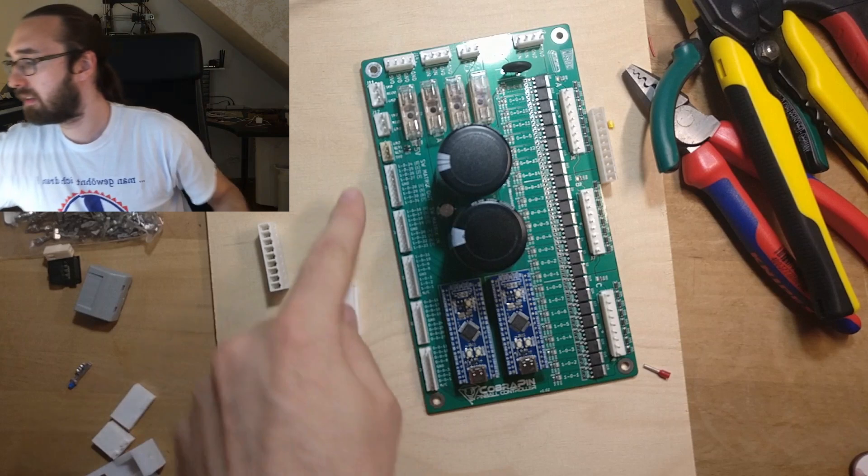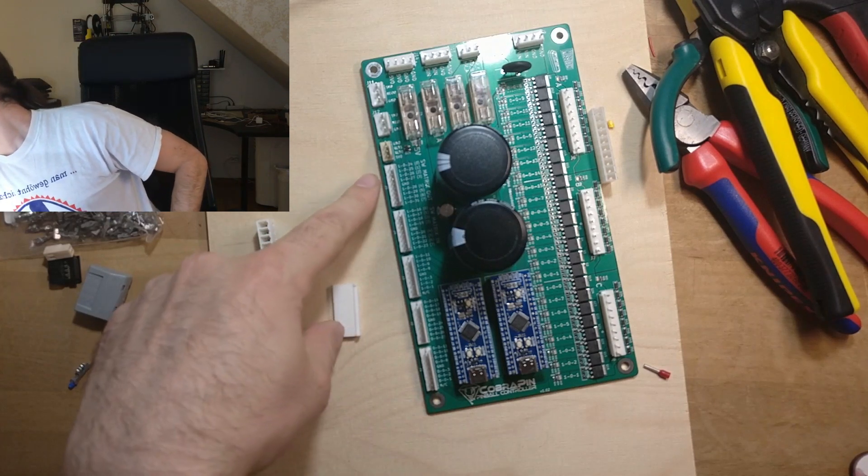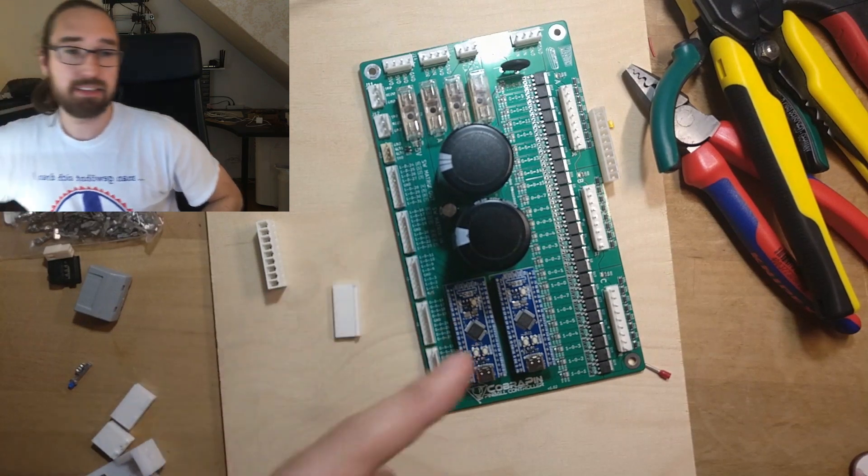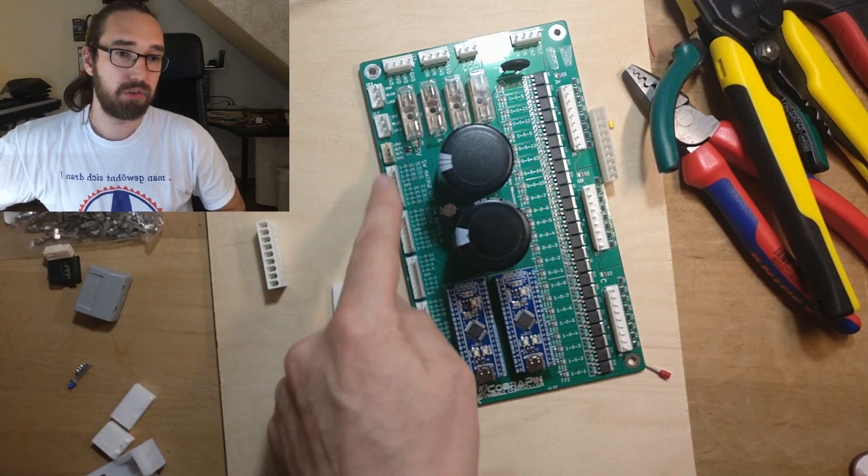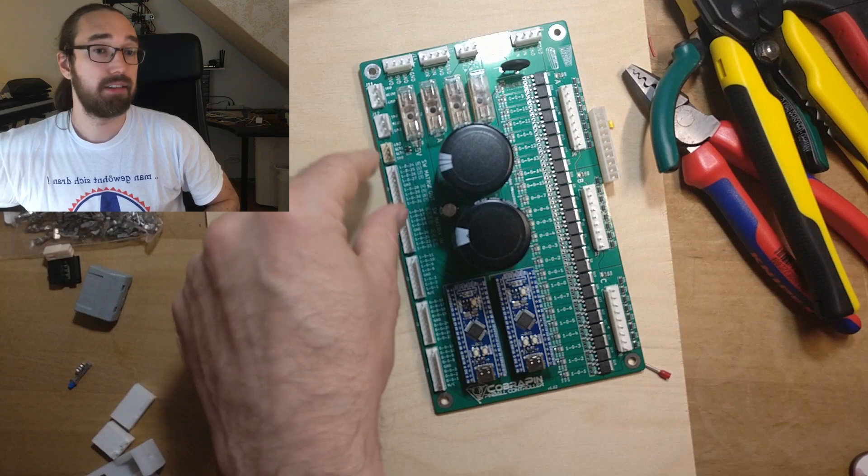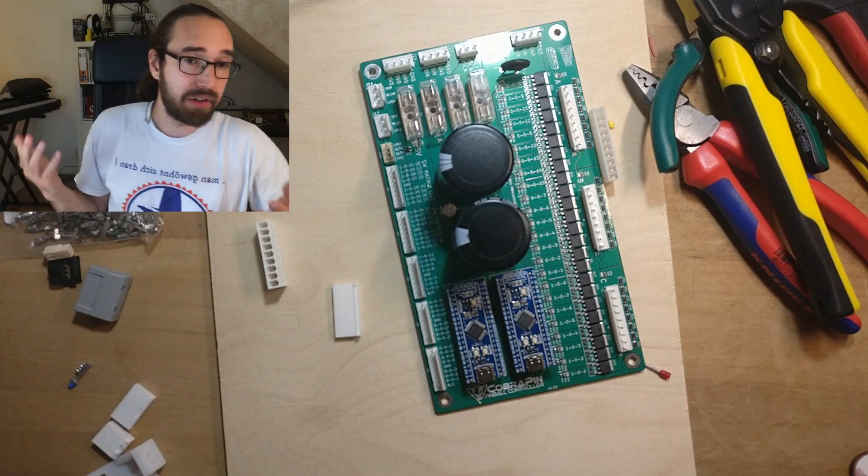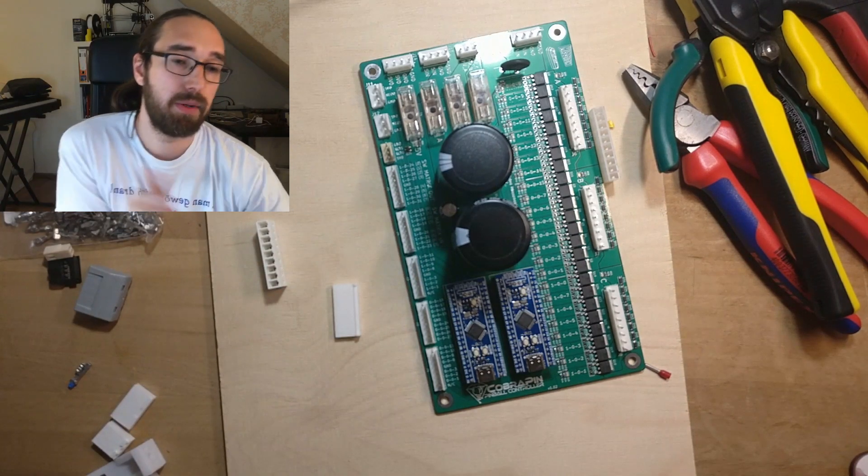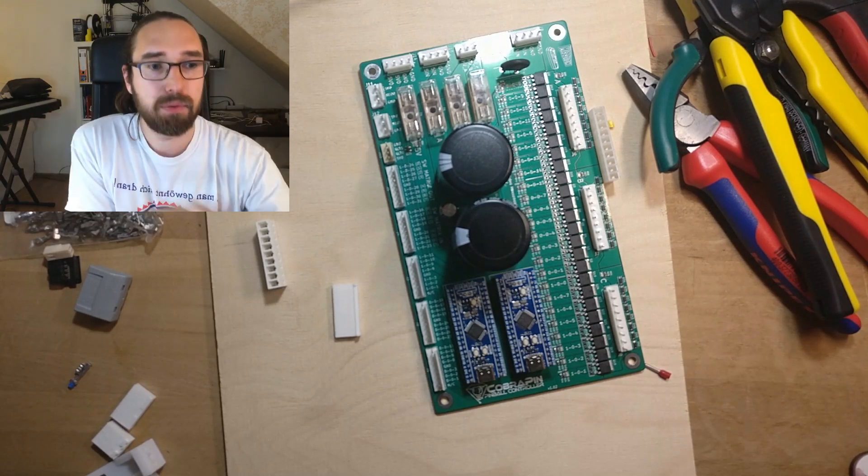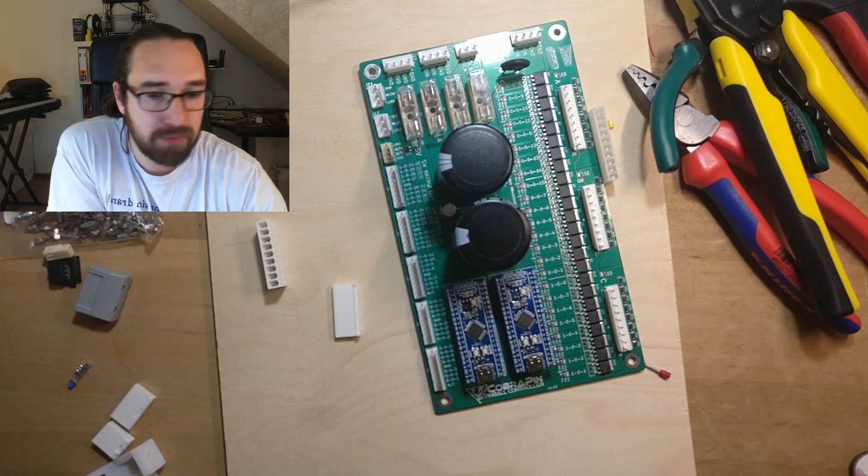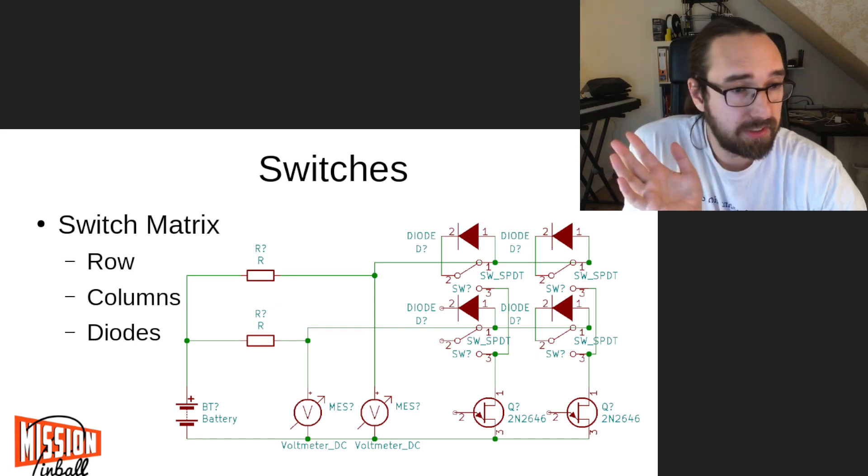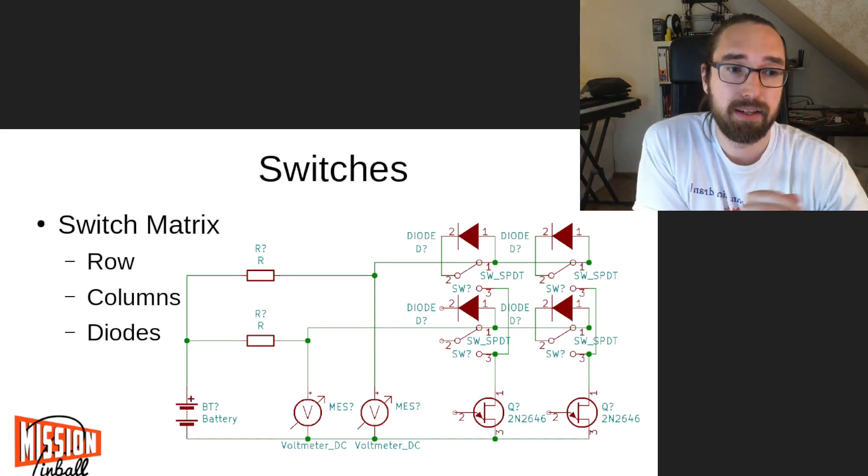On this board here, we got switch matrix out eight connectors and switch matrix in eight connectors. So we can have 64 switches with just those two connectors. This is just 24. And this is 64 switches, which is a lot of switches and not very much wiring for that. This is a little bit more complicated. And in a homebrew, I would think twice before running a switch matrix, but it works. That's how switches in general pinball work and how they are wired electronically.